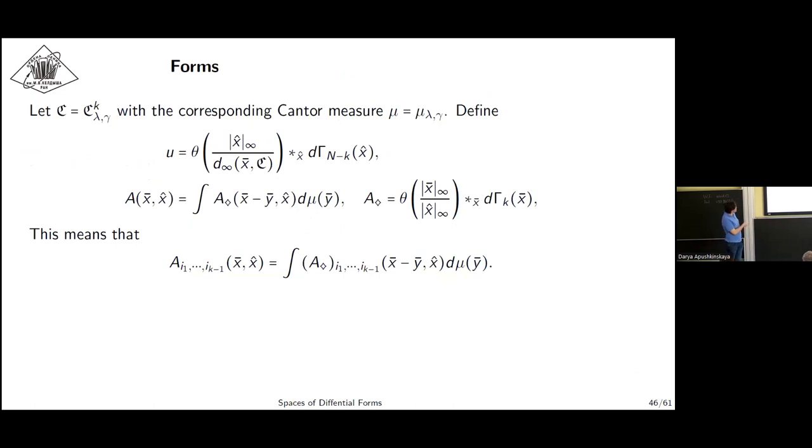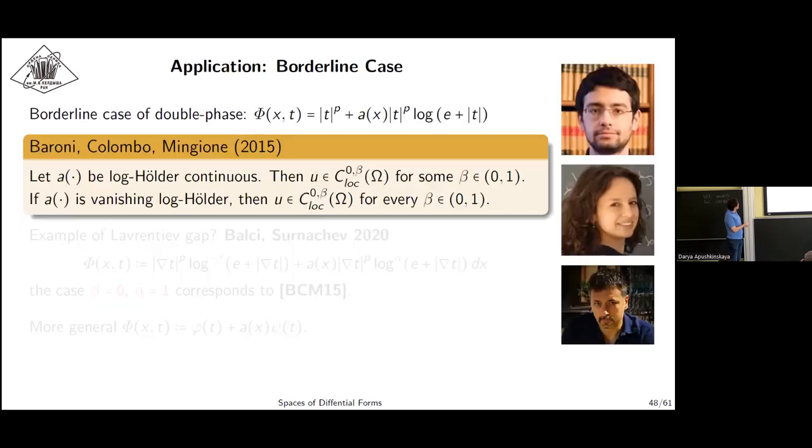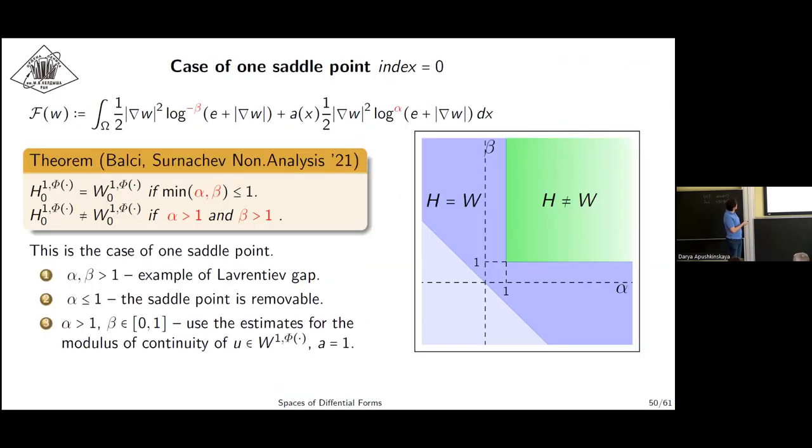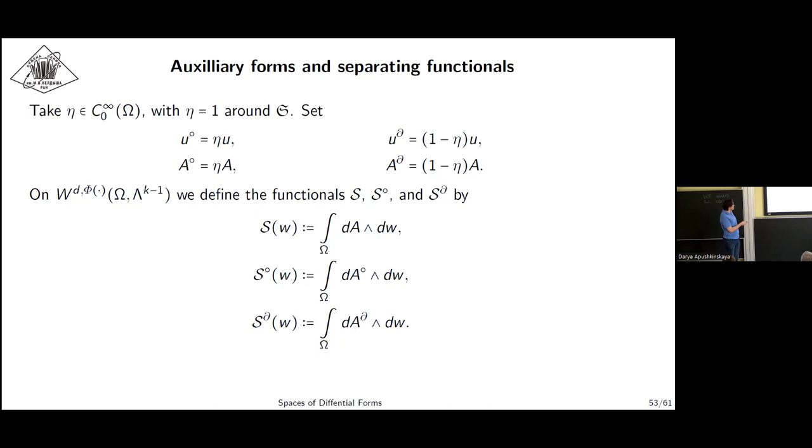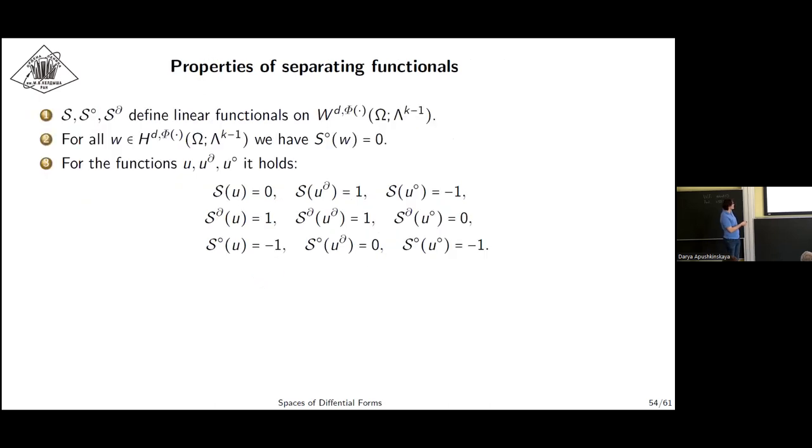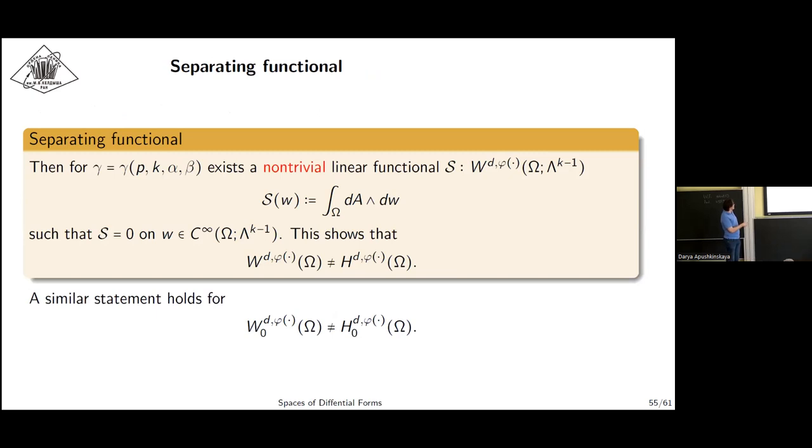Forms are built this way. This is a direct generalization of the example for forms. They have required properties. They satisfy this—here we work with double phase potential. One can construct a form with these integrability properties satisfying this, regular outside the singular set sigma. Basing on these forms we construct the separating functional as before, which separates smooth functions in this whole space. Here are admissible ranges of parameters and here is the conclusion.